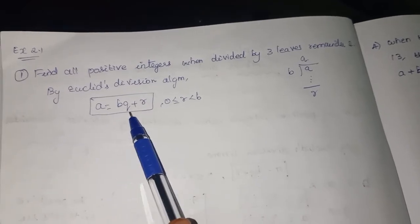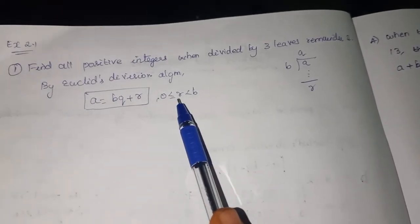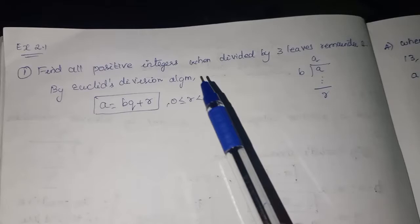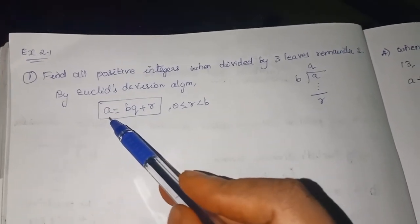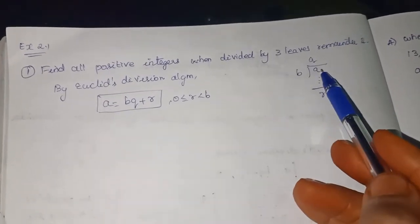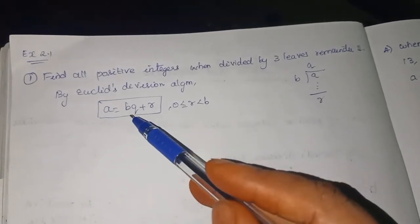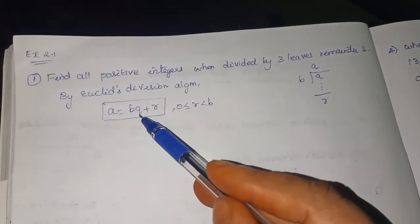A is equal to BQ plus R. The important condition is 0 less than or equal to R less than B. So A is nothing but that. This is nothing but division algorithm, right? Dividend. This is nothing but division algorithm.